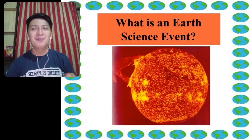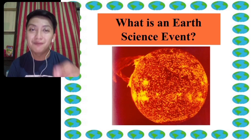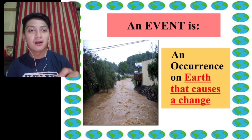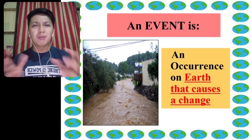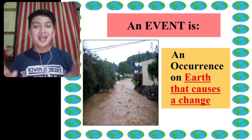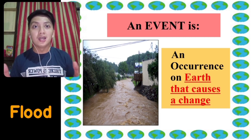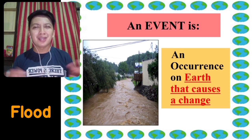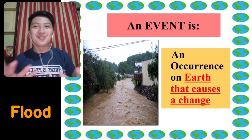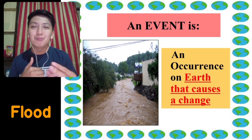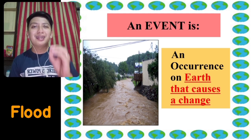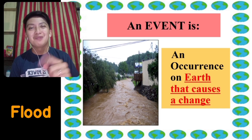Next, what is an Earth Science event? An event is an occurrence on earth that causes a change. For example, a flood is an event — something very abnormal. Here in Manila, because the city is at sea level, every time it rains hard, flooding occurs. This is also linked to improper waste disposal, so please do proper waste management.